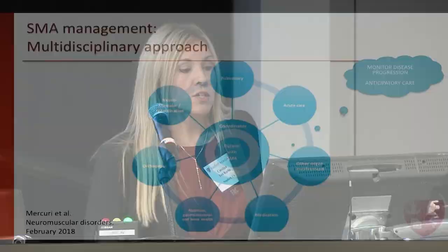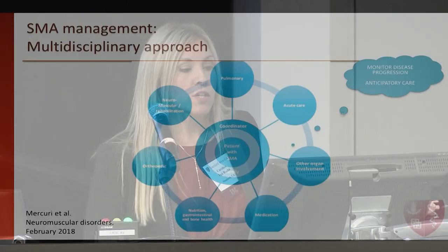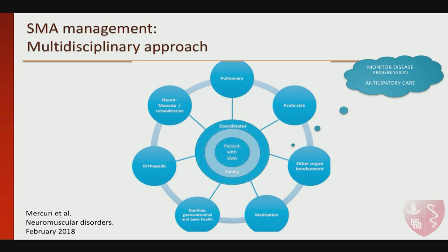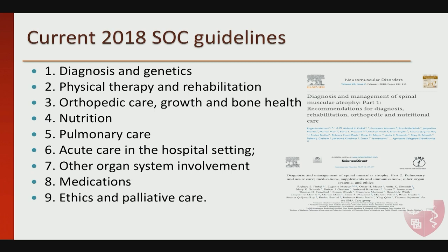SMA management pertains to all SMA types to be discussed today. Recommendations are already published, and they are always patient- and family-centered. This requires a multidisciplinary approach — it's almost impossible for a single neurologist, pediatrician, or pulmonologist to take this on alone. You have to work with a group of other clinicians, therapists, social workers, genetic counselors, orthopedic specialists, and pulmonologists to identify the best treatments and allow better monitoring of disease progression. The recently reviewed 2018 guidelines cover diagnosis and genetics, physical therapy and rehabilitation, orthopedic care, growth and bone health, and nutritional and pulmonary care.